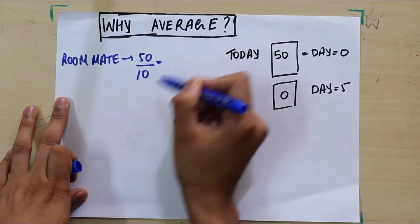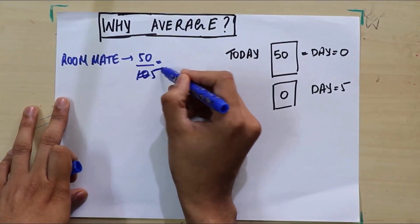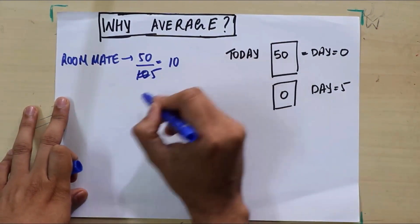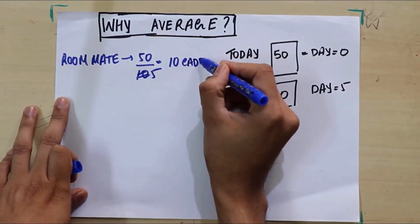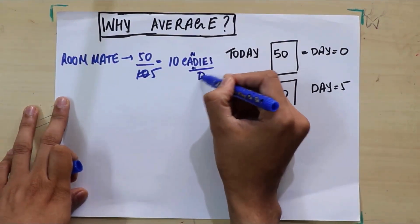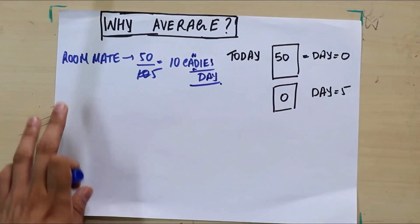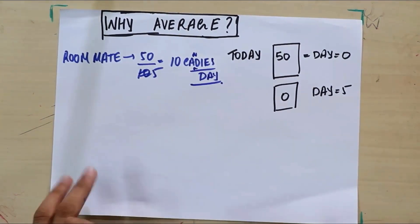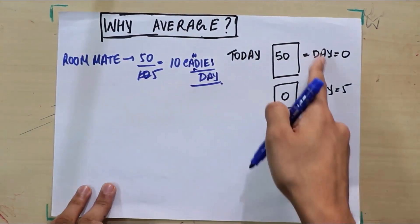sorry, divided by five, I would see 10 candies per day. So that's what I would assume: that he ate 10 candies every single day, and that's how he was able to finish off 50.